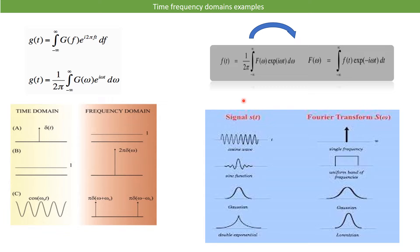The time-frequency domain example is the Fourier transformation. You will learn the conversion from time space to frequency space, from t to f or omega. There are common examples of signals along with their Fourier transforms: the cosine wave, the sinc function whose corresponding transform is the box function, the Gaussian curve, and the double exponential which converts into a Lorentzian in Fourier space. I have already described this in my last lecture.